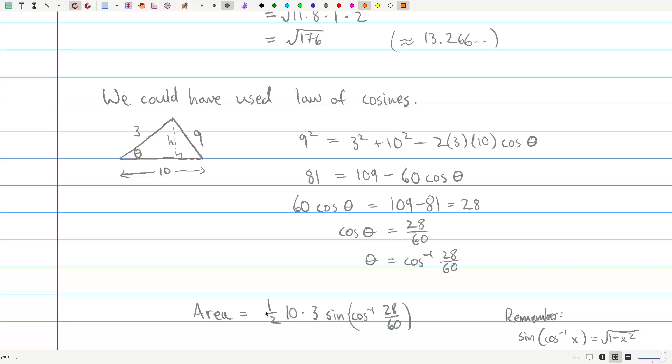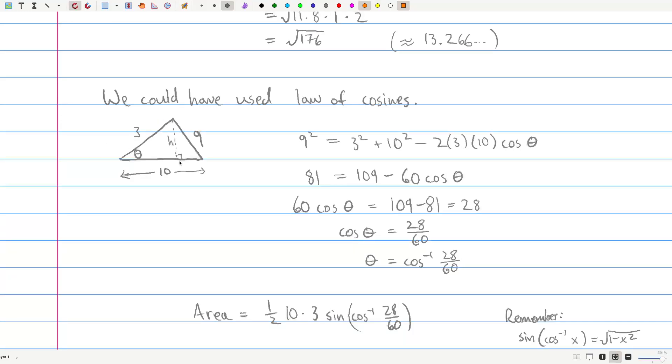So now what? We have theta, so we can plug it right into the formula for area. It's 1 half base, which is 10. Well, 1 half times the product of the two adjacent sides, 3 times 10. And then we're doing sine of theta.